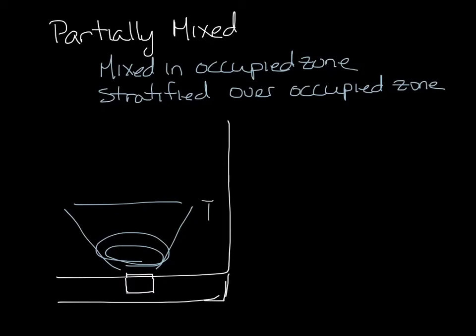The air comes out swirling and it has a throw of about four to five feet. The air is rapidly swirling out of the face, which induces room air into the supply air and creates a mixed space up to that five foot range.